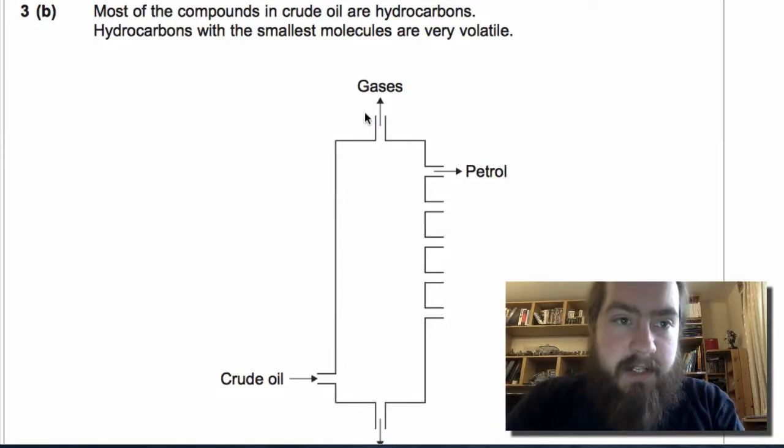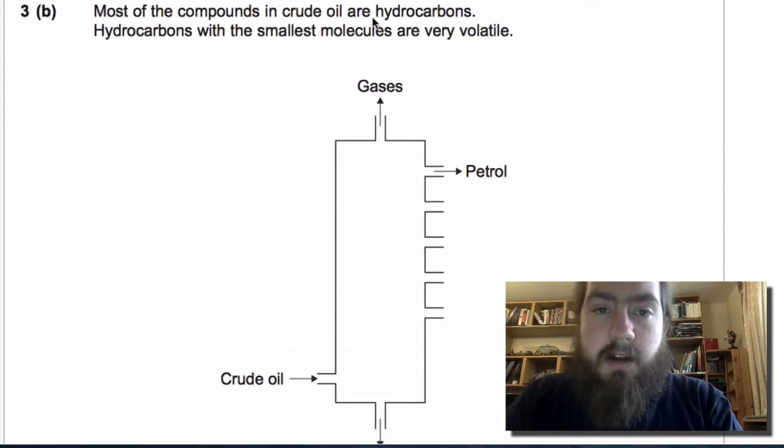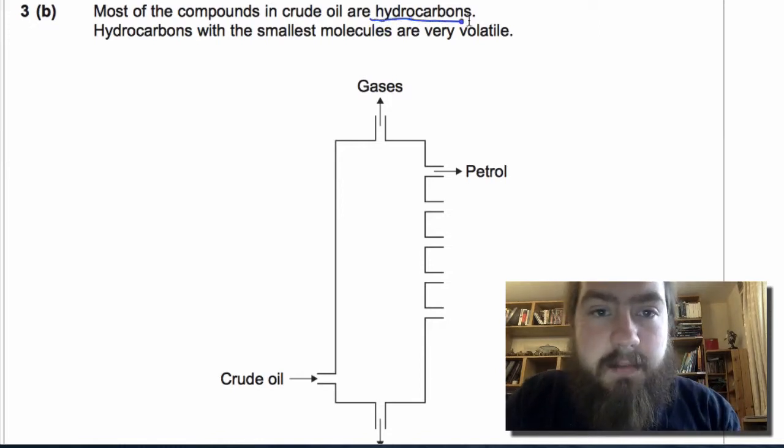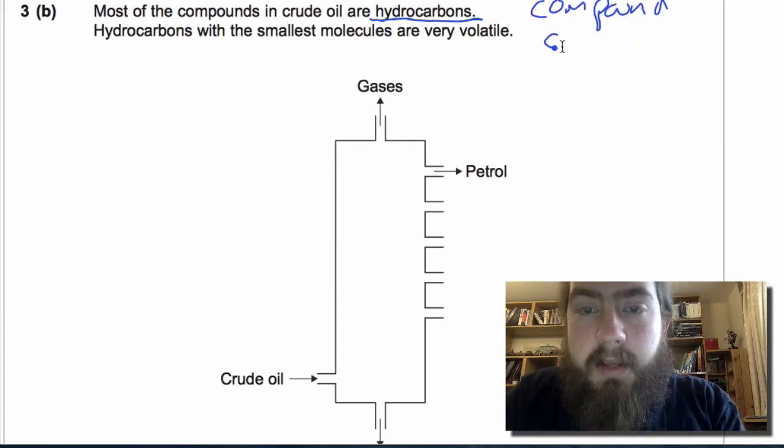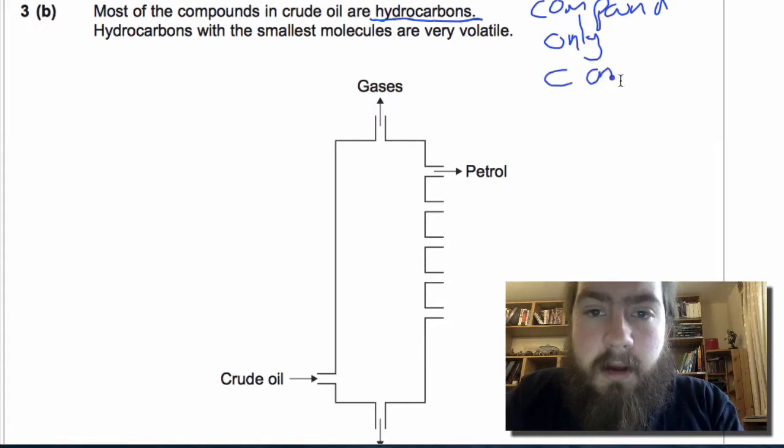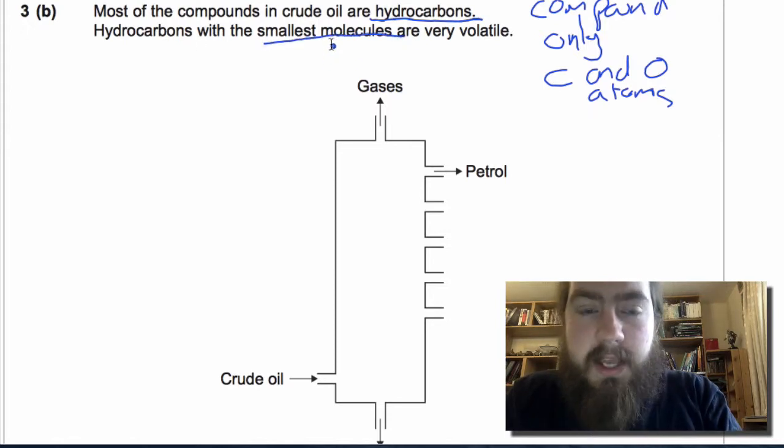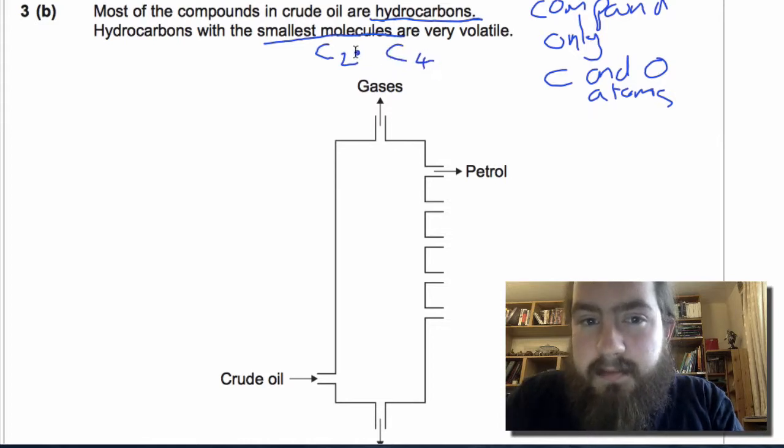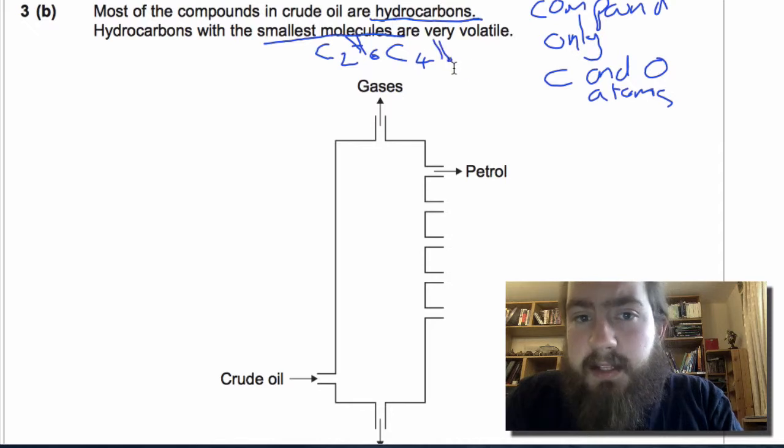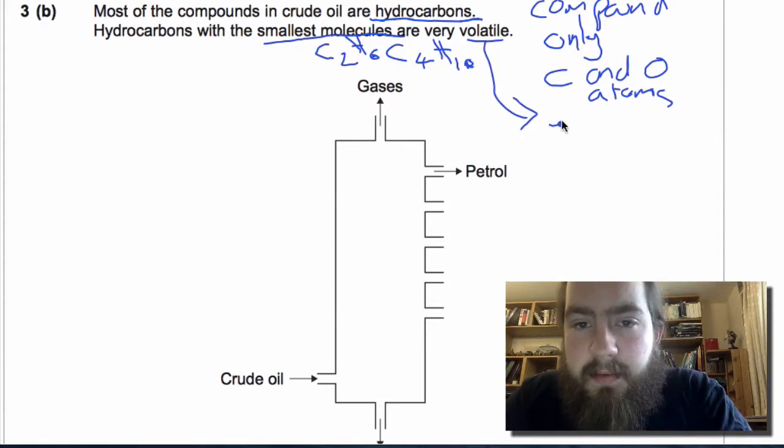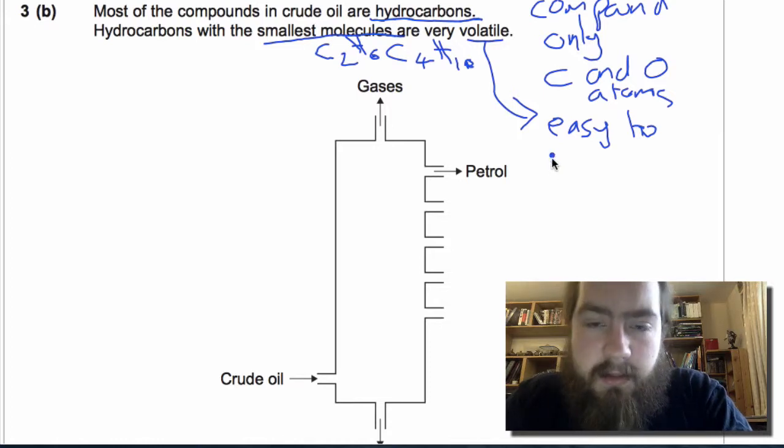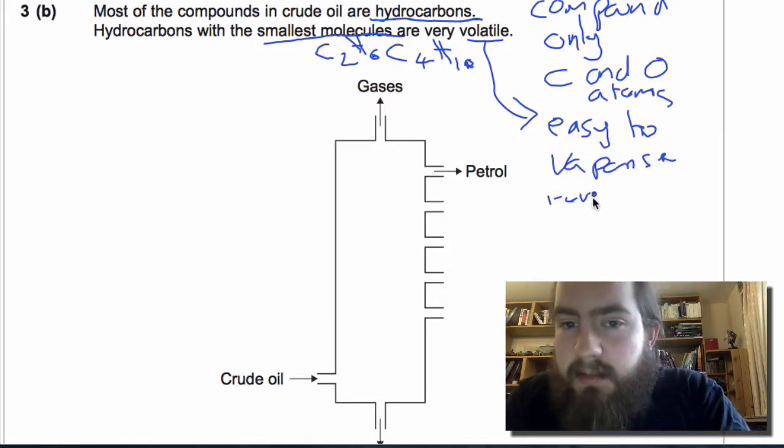Part B. Now this is looking at fractional distillation, so we've got a nice diagram here of our fractional distillation column. Most of the compounds in crude oil are hydrocarbons. Hydrocarbons with the smallest molecules, so that will be the ones with C2 or C4, C2H6, C4H10, are very volatile. Volatile means easy to vaporize, as in turn into a gas.